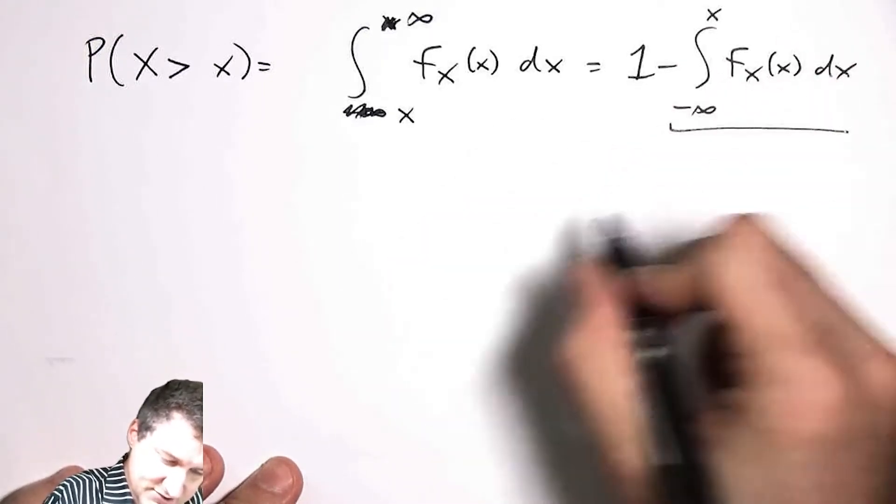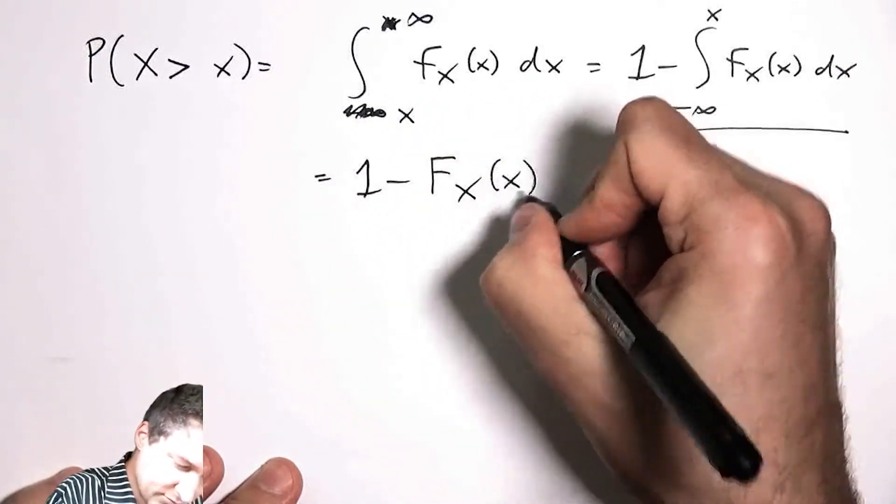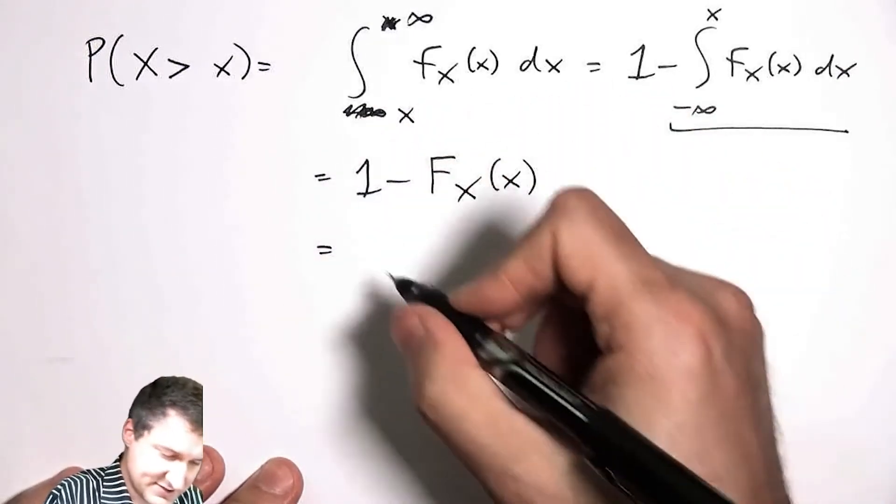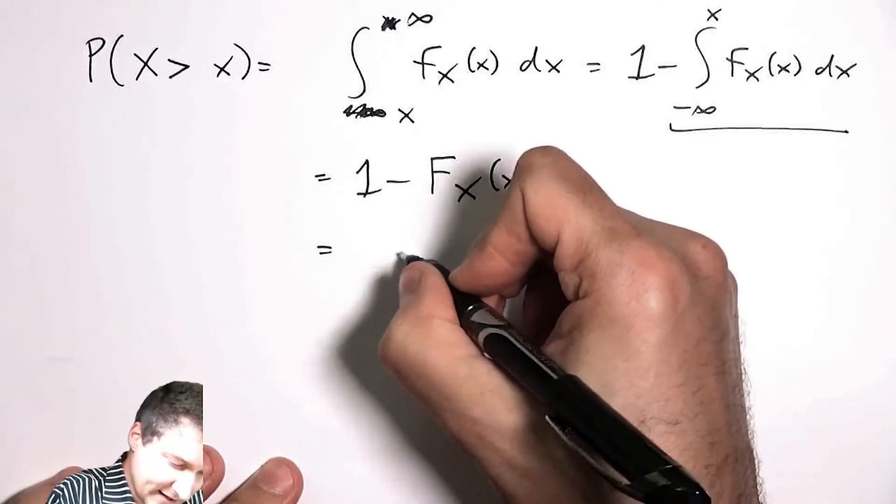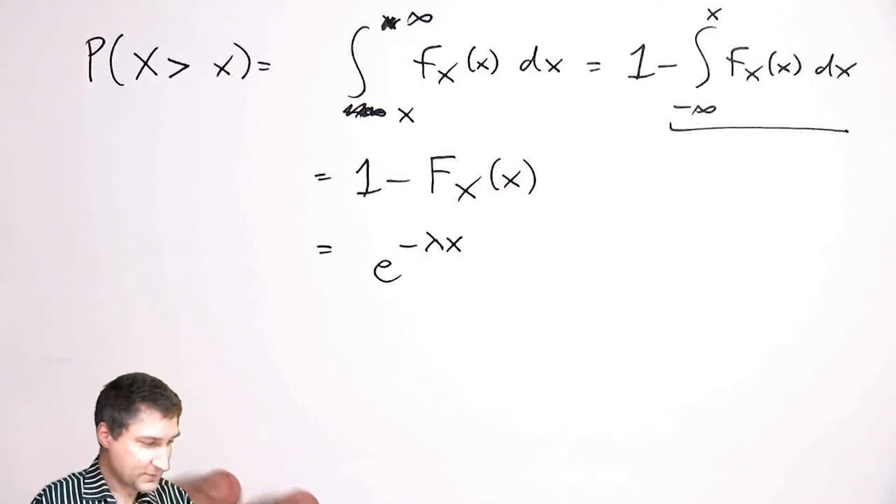This part here is just the CDF, so this is just like one minus the CDF up to that point. Referring back to the CDF, I've got e to the minus lambda x.